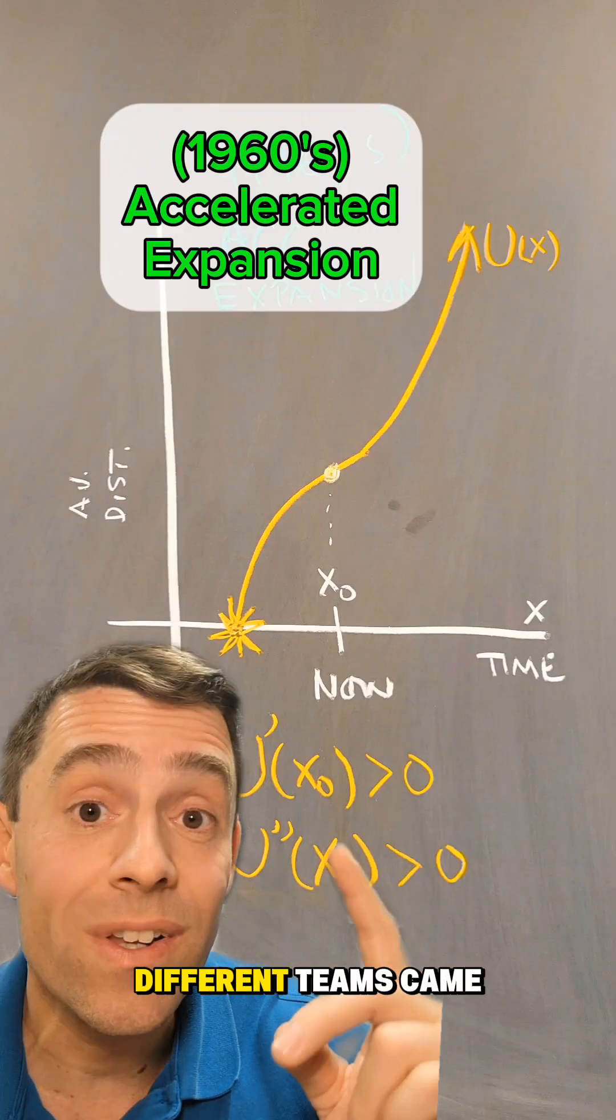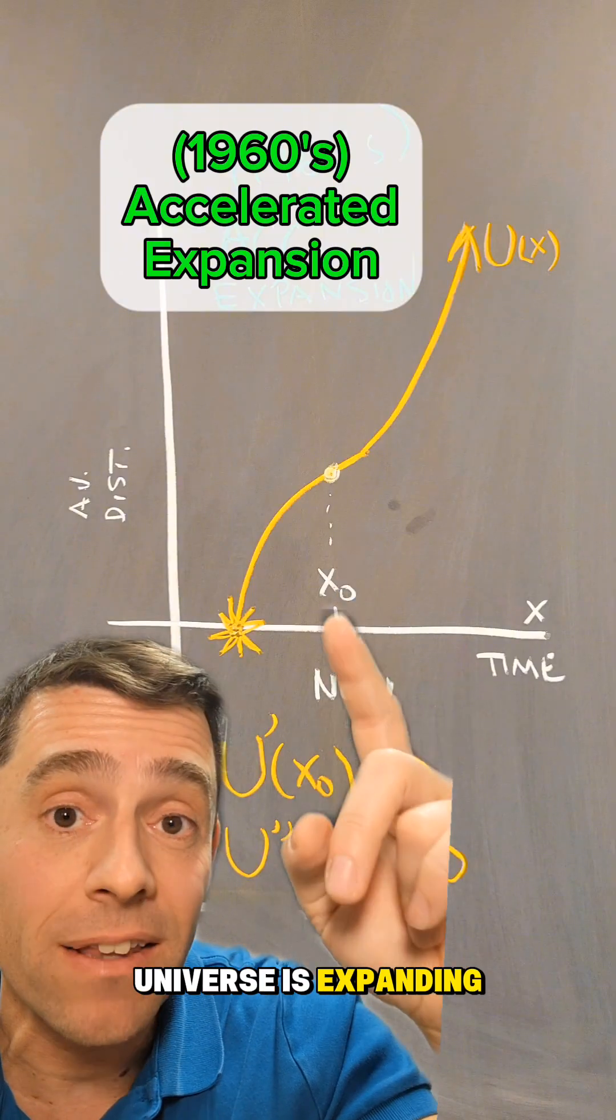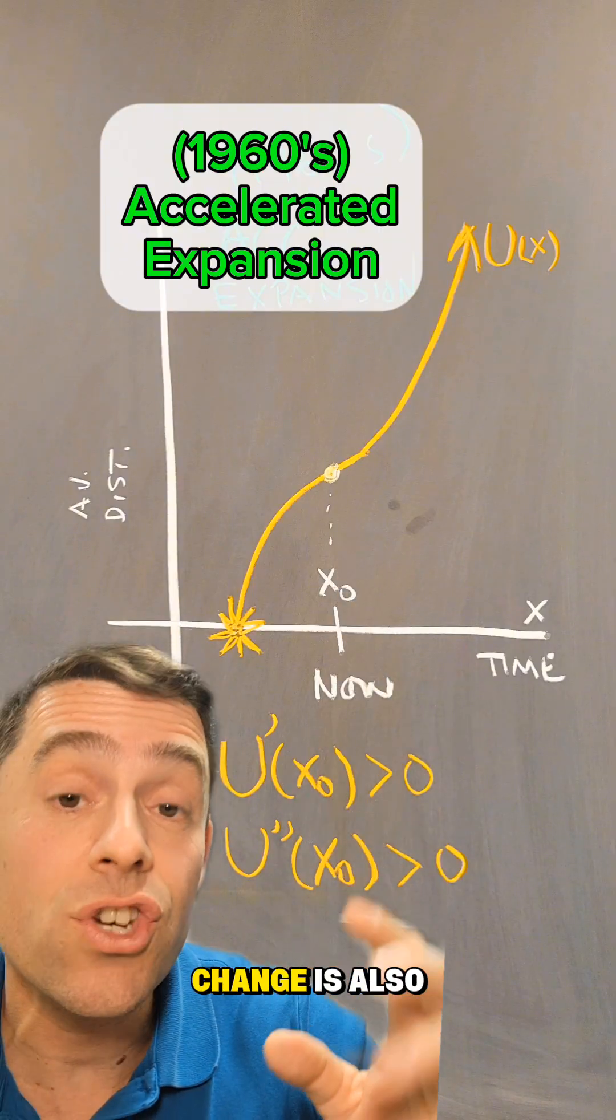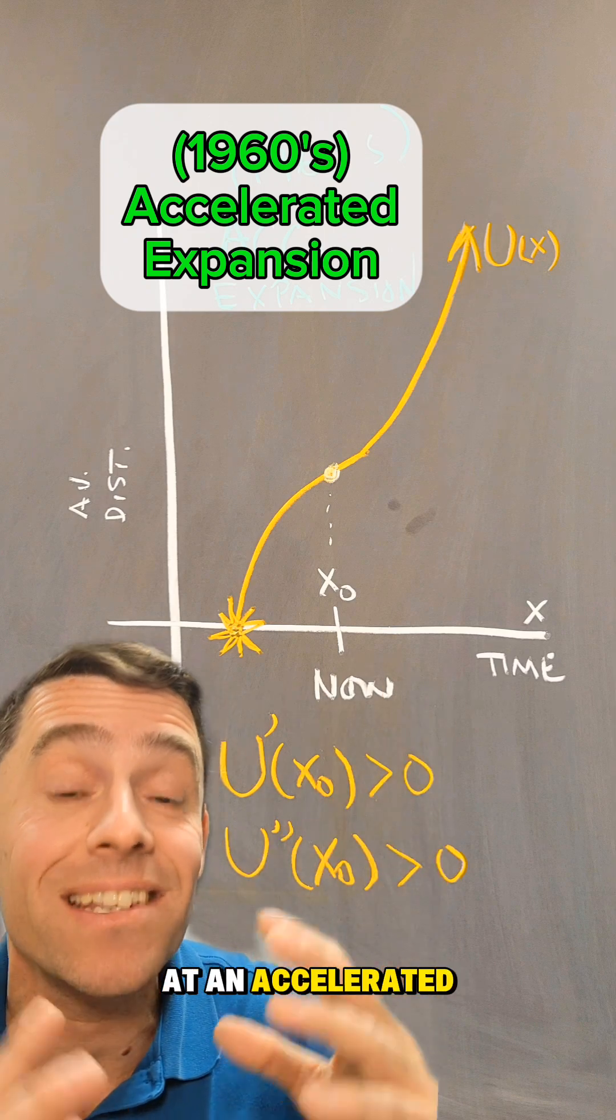And then in the 1960s, two different teams came to the conclusion that not only is the universe expanding, the rate of change is also increasing so that the universe is expanding at an accelerated rate.